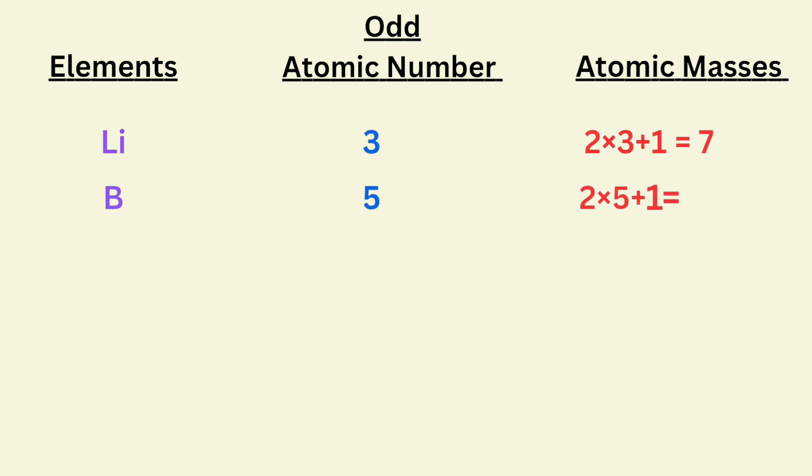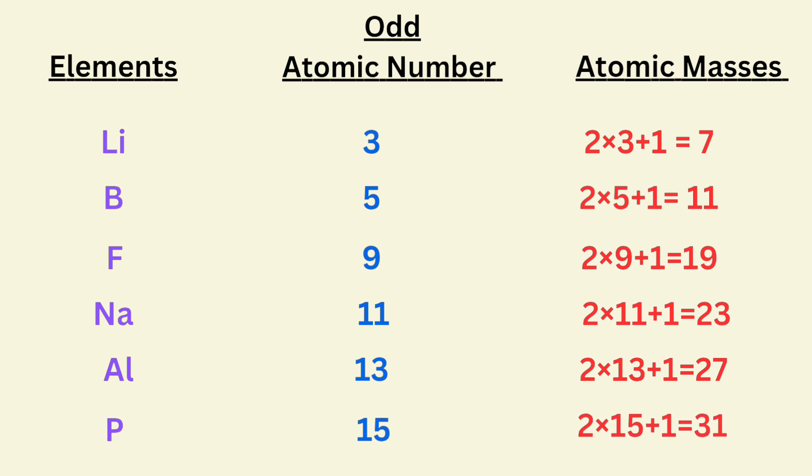Atomic number of boron is 5 and atomic mass is 11. Atomic number of fluorine is 9 and atomic mass is 19. Atomic number of sodium is 11 and atomic mass is 23. Atomic number of aluminium is 13 and atomic mass is 27. Atomic number of phosphorus is 15 and atomic mass is 31. Remaining will be your homework.